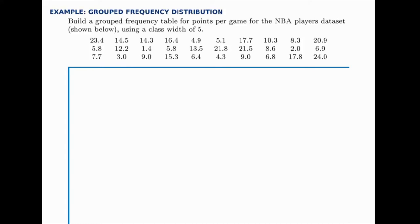Here we're going to build a grouped frequency table using the data set of NBA players with their points per game shown below. So we have 30 values ranging from 1.4 up to about 24.